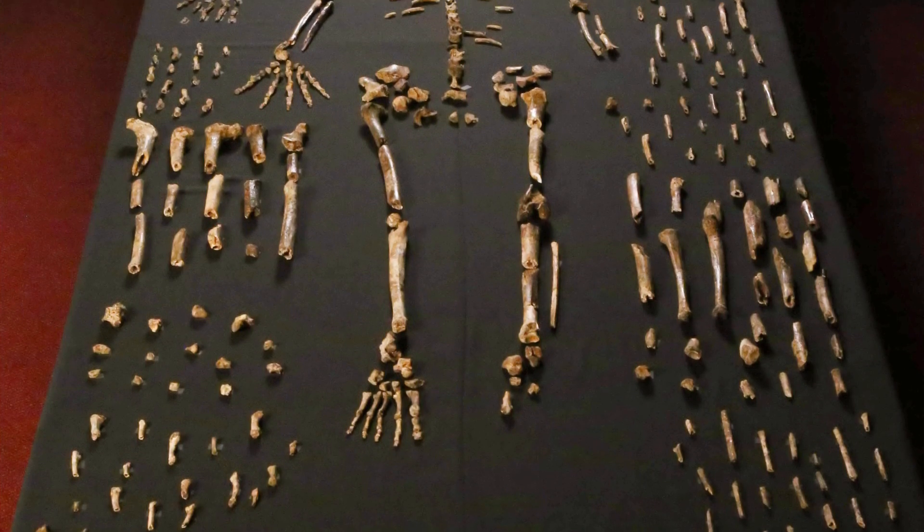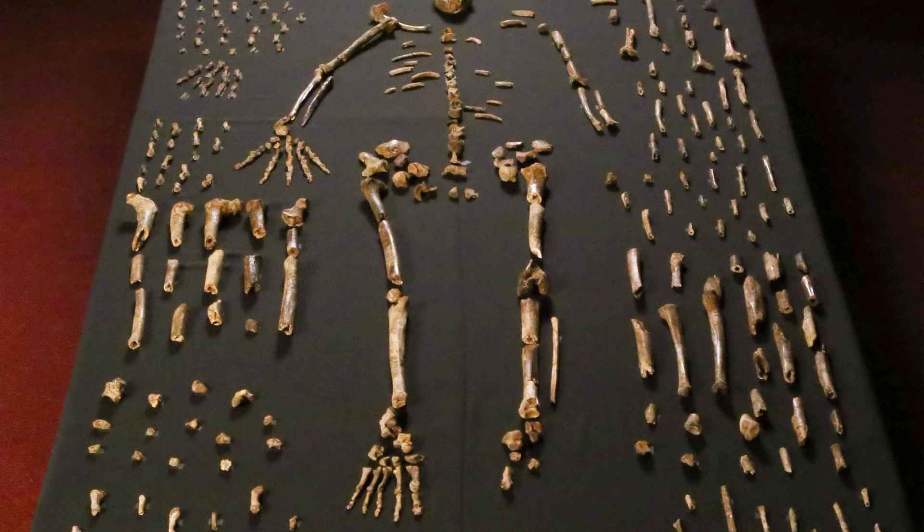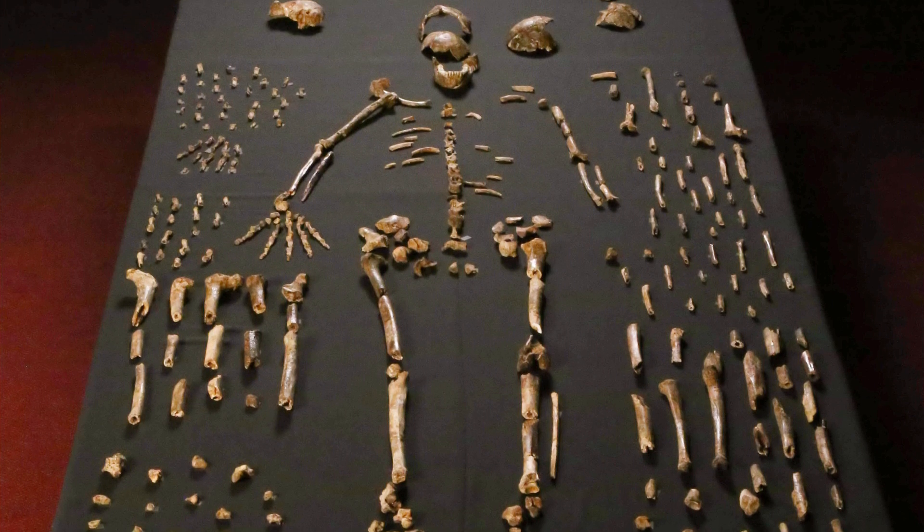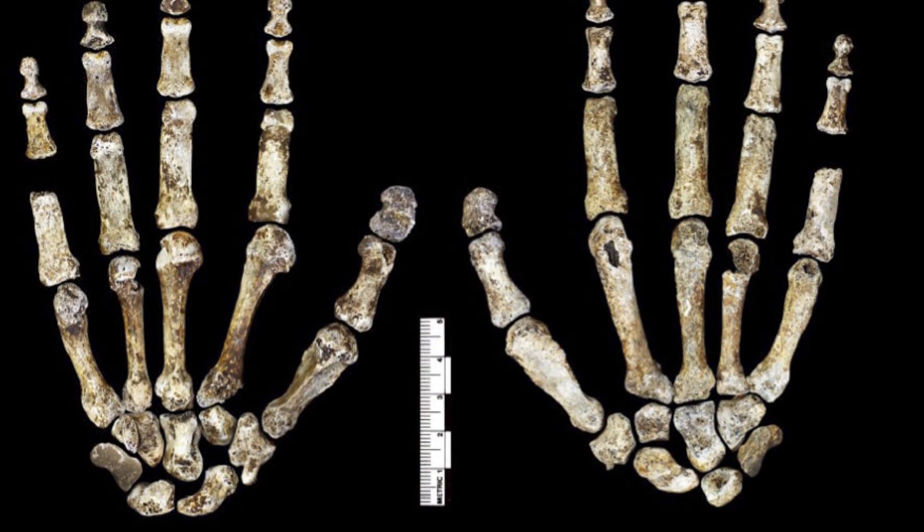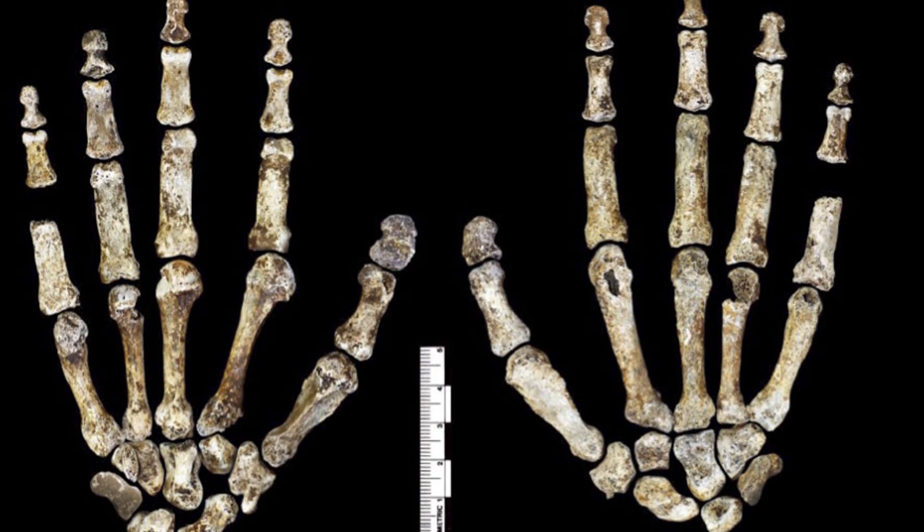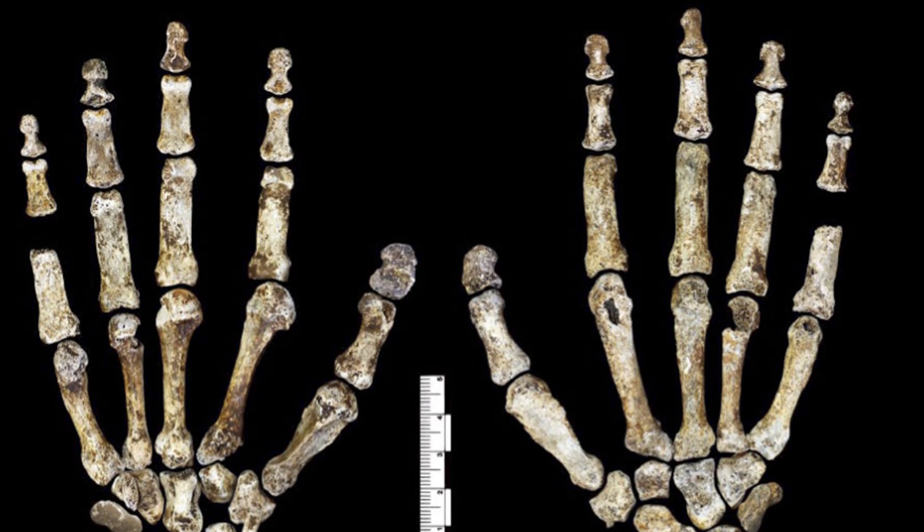So far, it is known that this species of human grew to an average height of 5 feet and had a brain no larger than an orange. The way the bones in the South African cave were arranged suggests that these human ancestors ritualistically buried their dead, giving scientists a glimpse into our cultural past.